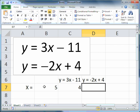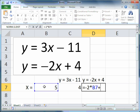In cell D7, I'm going to enter the formula for the second equation, minus 2 multiplied by x plus 4.